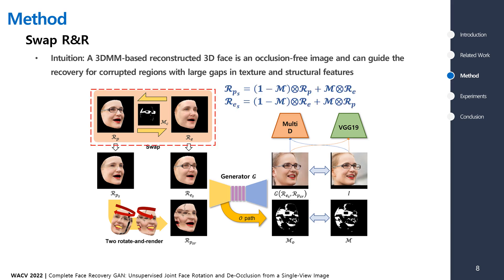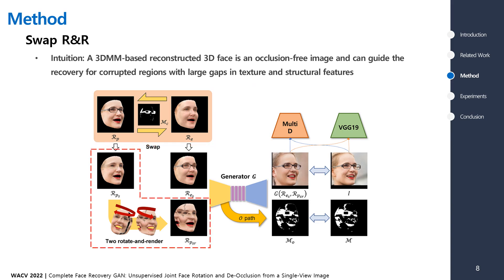Next, we swap the texture between RPE and RE for the occlusion area that exists within RPE. Finally, RPSR is generated as a blended image through two rotated render operations.